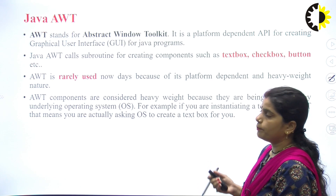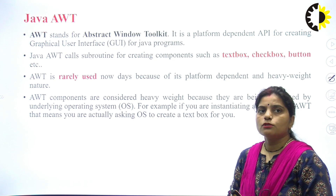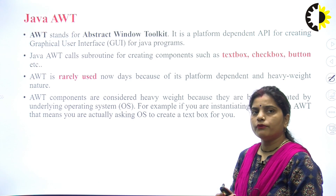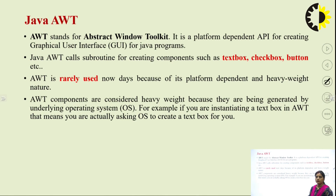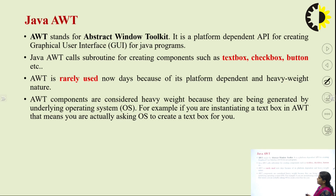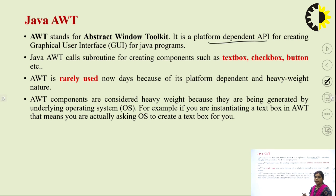Moving on to the topic of AWT — the full form of AWT is Abstract Window Toolkit. It is a kind of API used to create window-based applications and also GUIs for Java programs. However, although Java is a platform-independent language, Java AWT is a platform-dependent API.